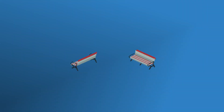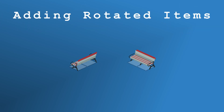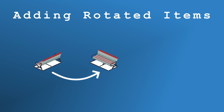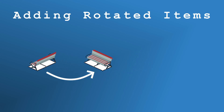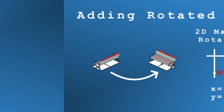Once we've got the graphics for our items, we can work on adding rotated items to the world. This is fairly simple to add, as all it requires is rotating the footprint for each item in the grid. This is easily done with 2D matrix rotation, and from there the grid can take the item in as normal.